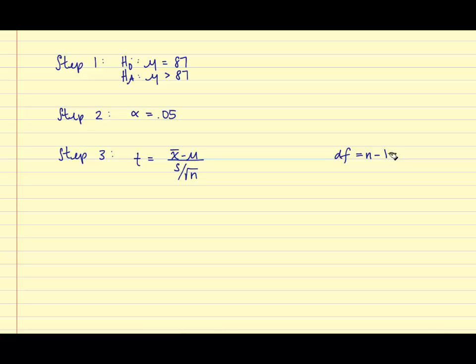So, in this sample of 7 hotels, the mean was determined to be $135 with a standard deviation of $40. And so, we have x bar is equal to 135, mu, which is derived from the null hypothesis is equal to 87, and that's all over $40 divided by the square root of 7. And therefore, t is equal to 3.17.